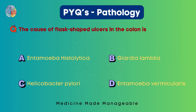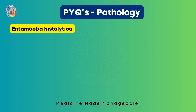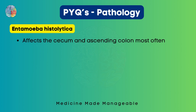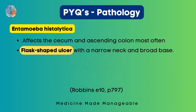The cause of flask-shaped ulcers in the colon is due to Entamoeba histolytica, Giardia lamblia, Helicobacter pylori, or Entamoeba vermicularis? The correct answer is Entamoeba histolytica. Feco-oral transmission is seen here, and the cysts have 4 nuclei and a chitin wall which is resistant to gastric acid — this allows it to pass through the stomach. It affects the cecum and ascending colon most often, and flask-shaped ulcers with a narrow neck and broad base are seen.